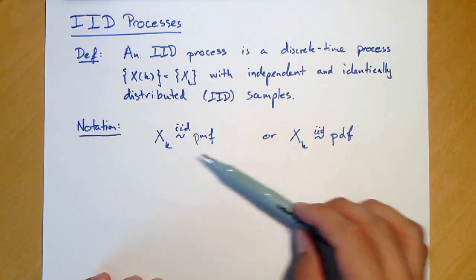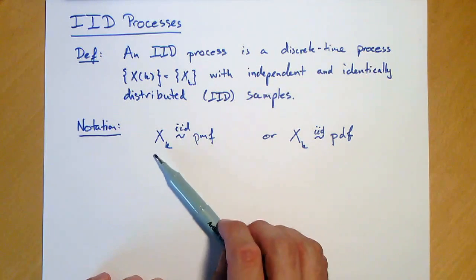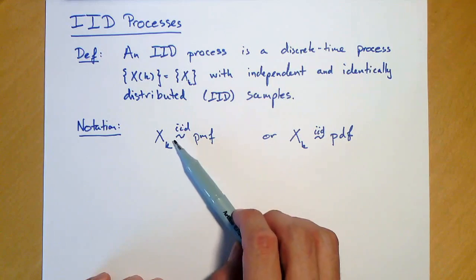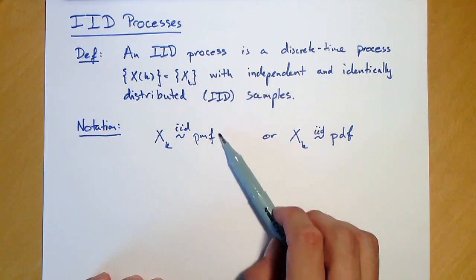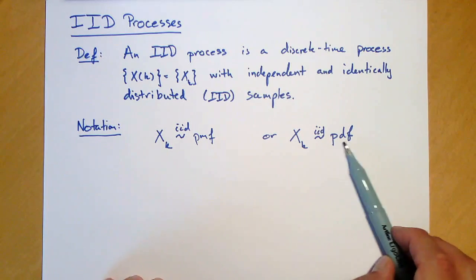We use this notation here to indicate an IID process. To define an IID process, xk is distributed IID according to a probability mass function or according to a probability density function.